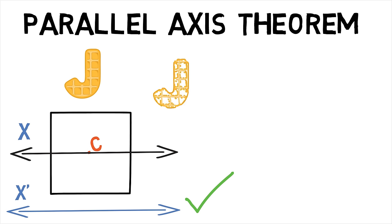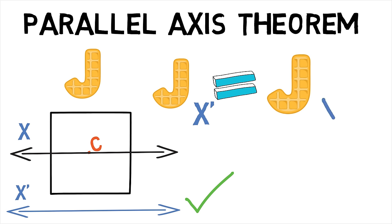The parallel axis theorem states that area moment of inertia about an axis X' is equal to the area moment of inertia about the centroidal axis X plus the product of area and the squared perpendicular distance between X and X'. Third and final type is the polar moment of inertia, which is a shaft or beam's resistance to being distorted by torsion as a function of its shape.